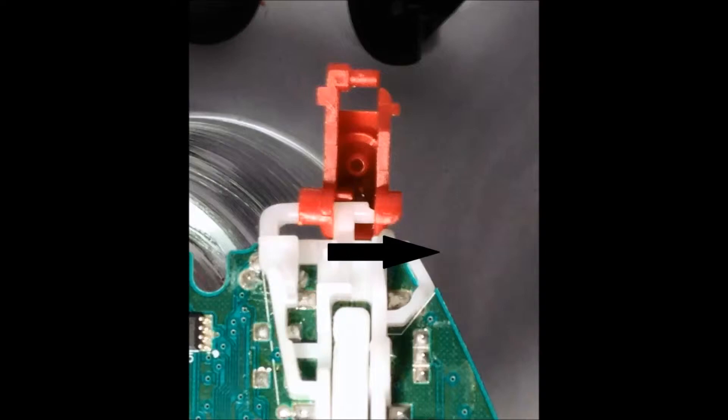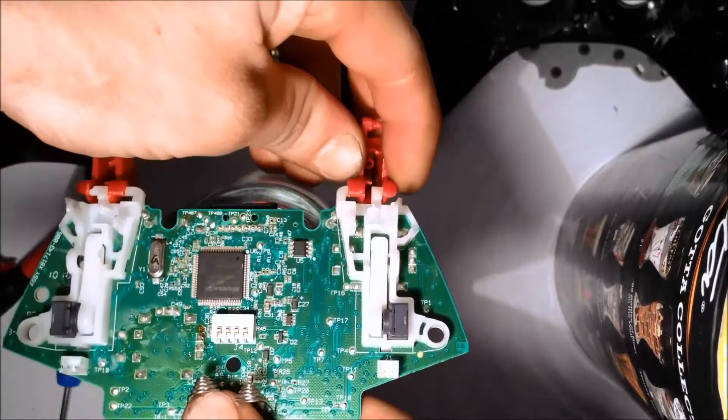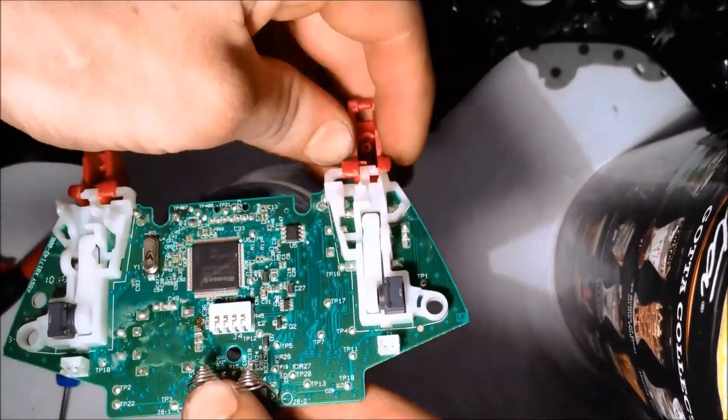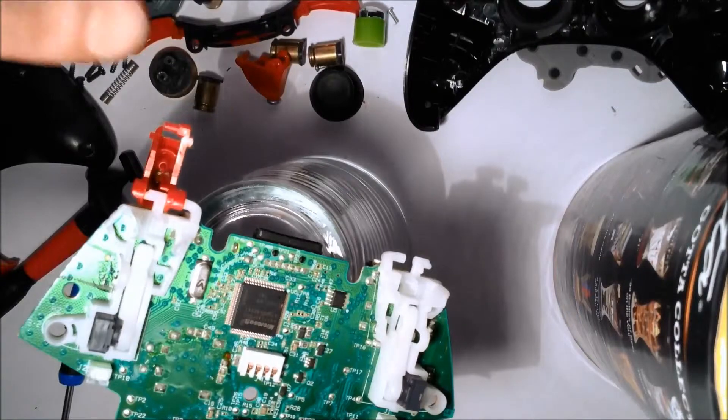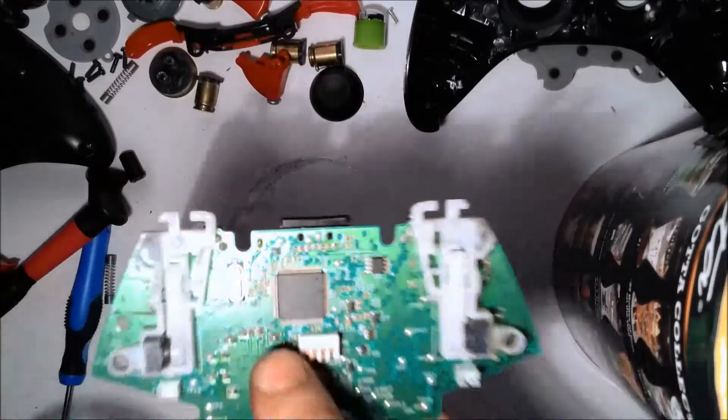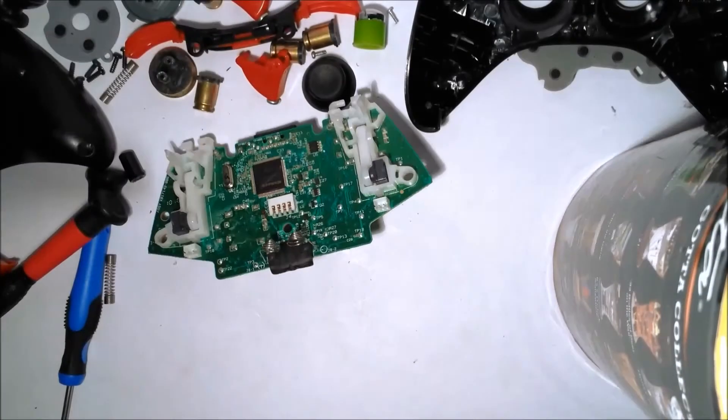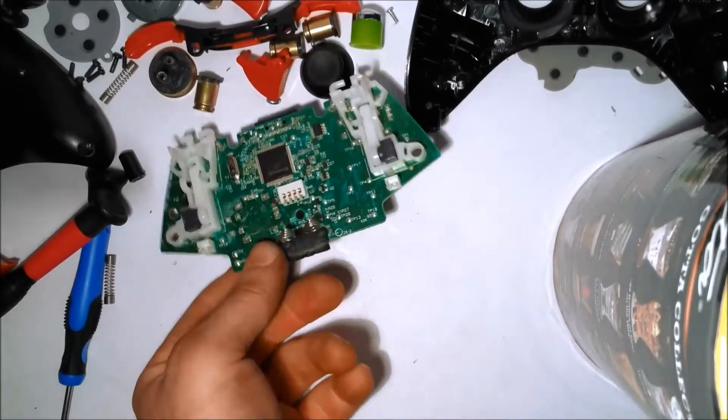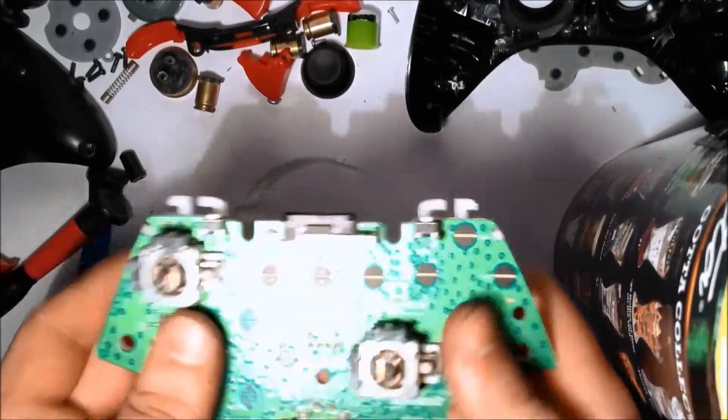Next, to remove the trigger completely, just slide it off with the little pulls. Now your controller is complete. Everything has been removed, and you're ready to reassemble it.